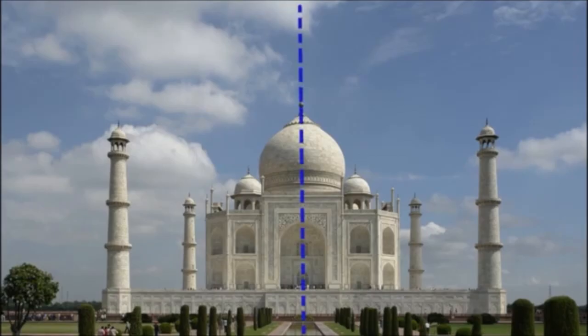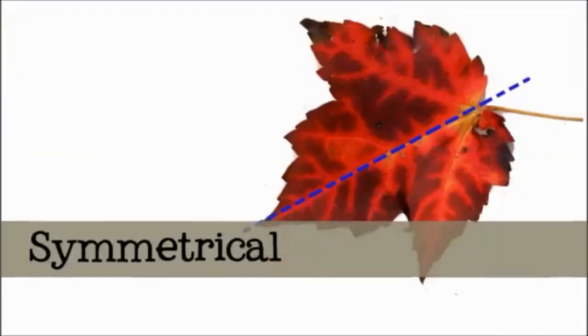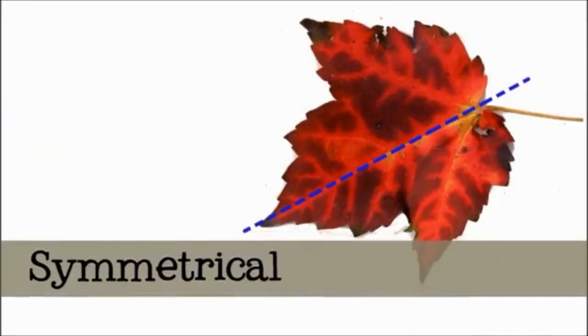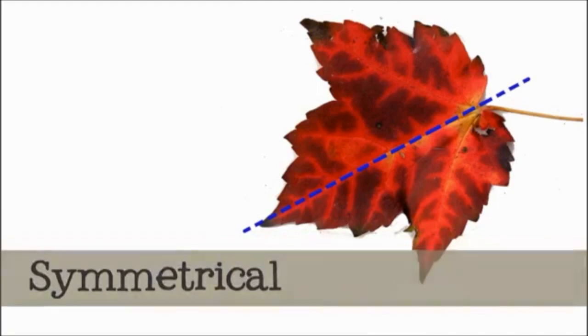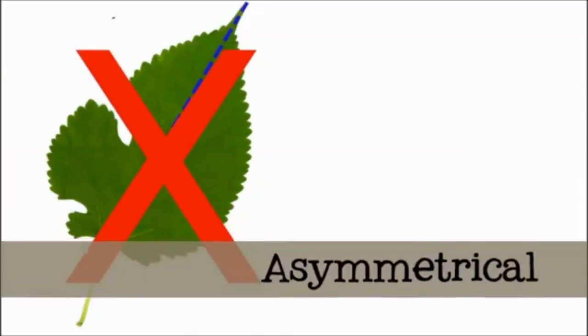An object that has symmetry can be divided into identical pieces. When an object has symmetry, we say that it is symmetrical. When an object does not have symmetry, we say that it is asymmetrical.